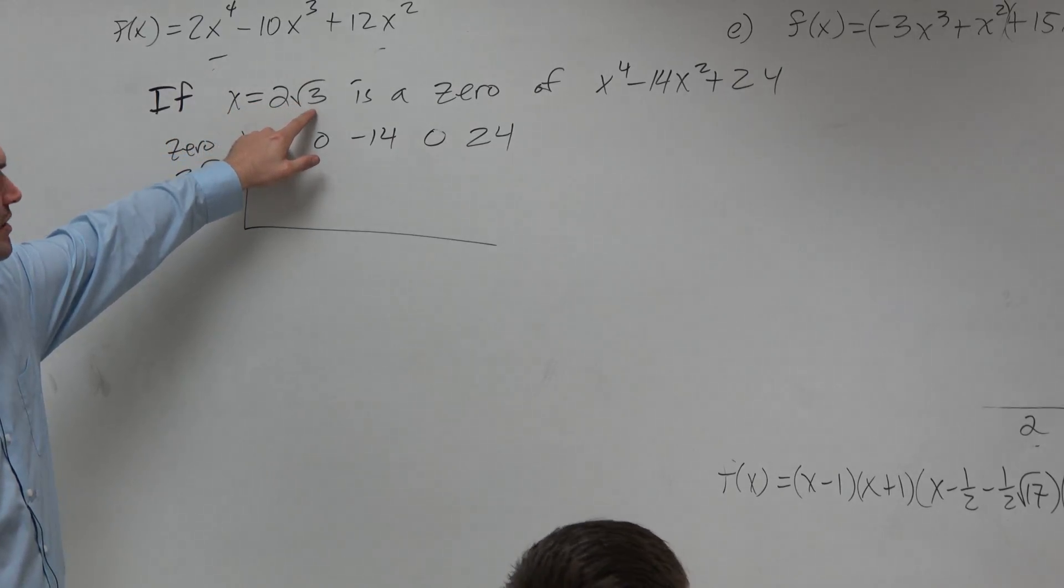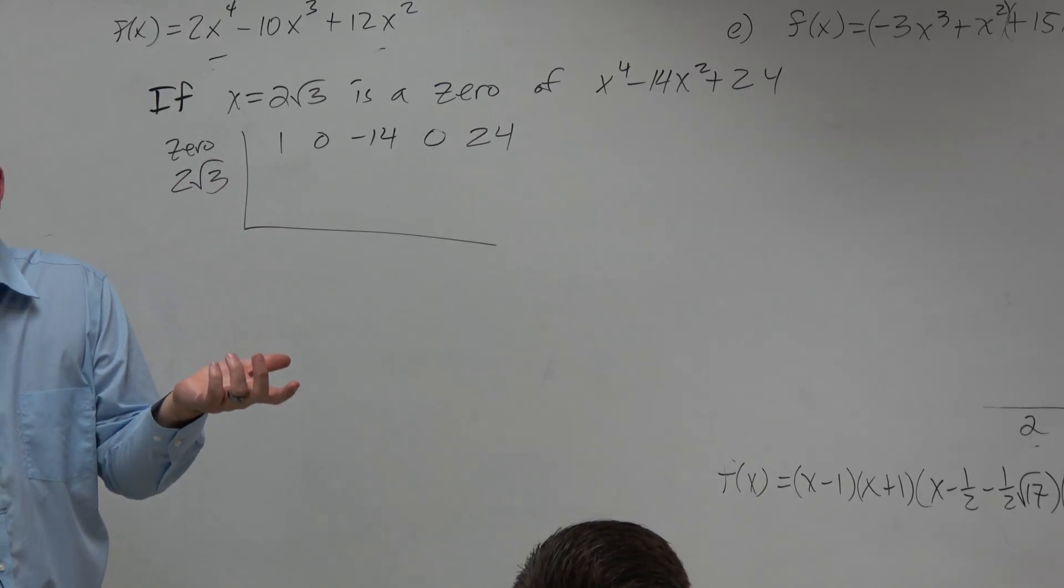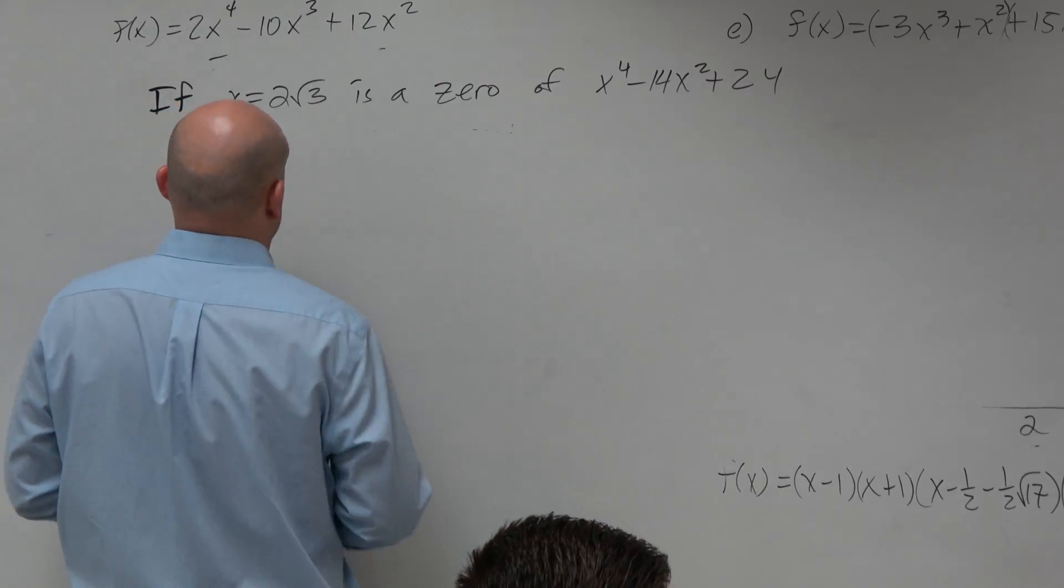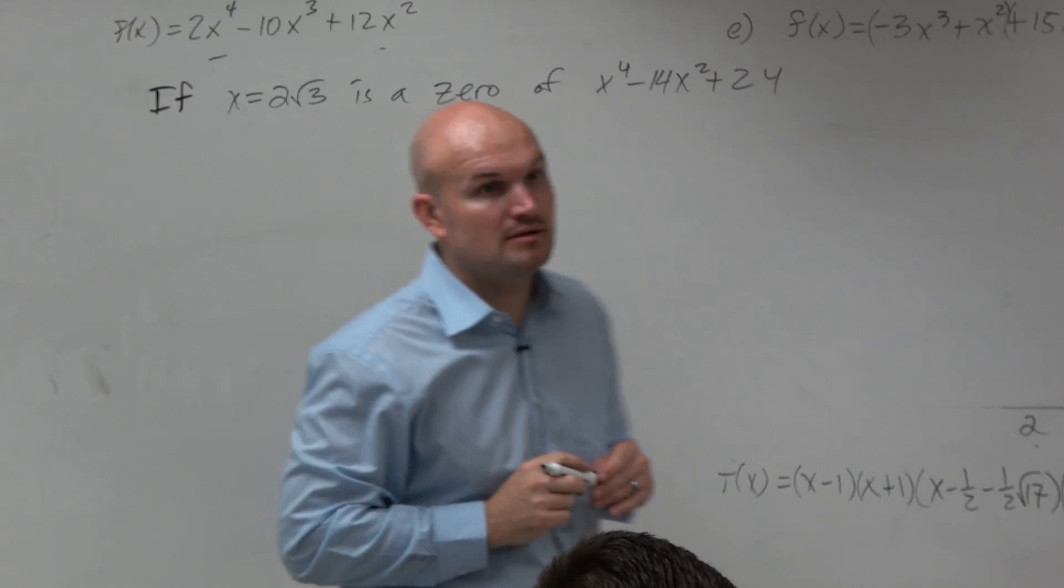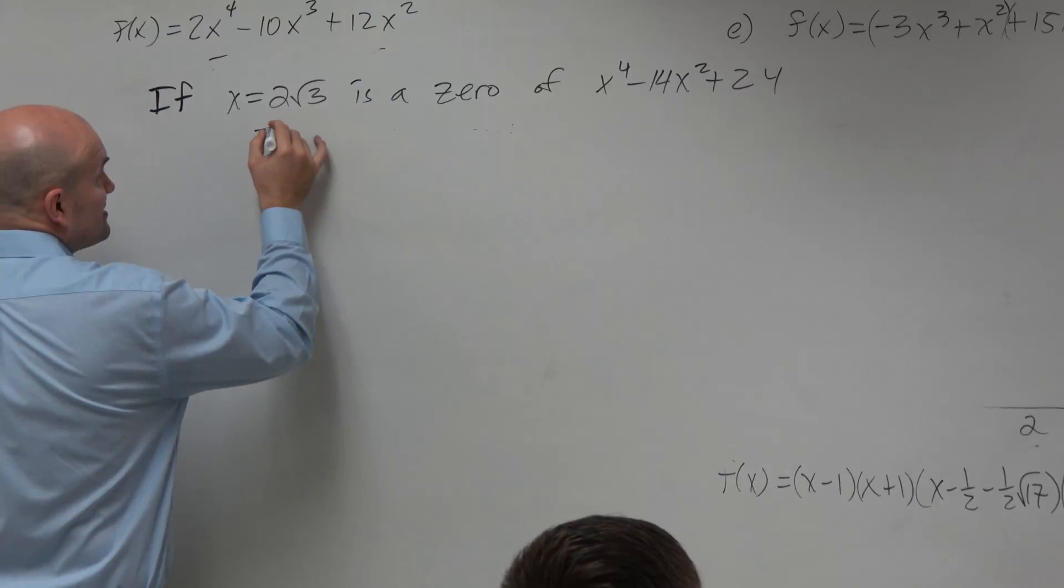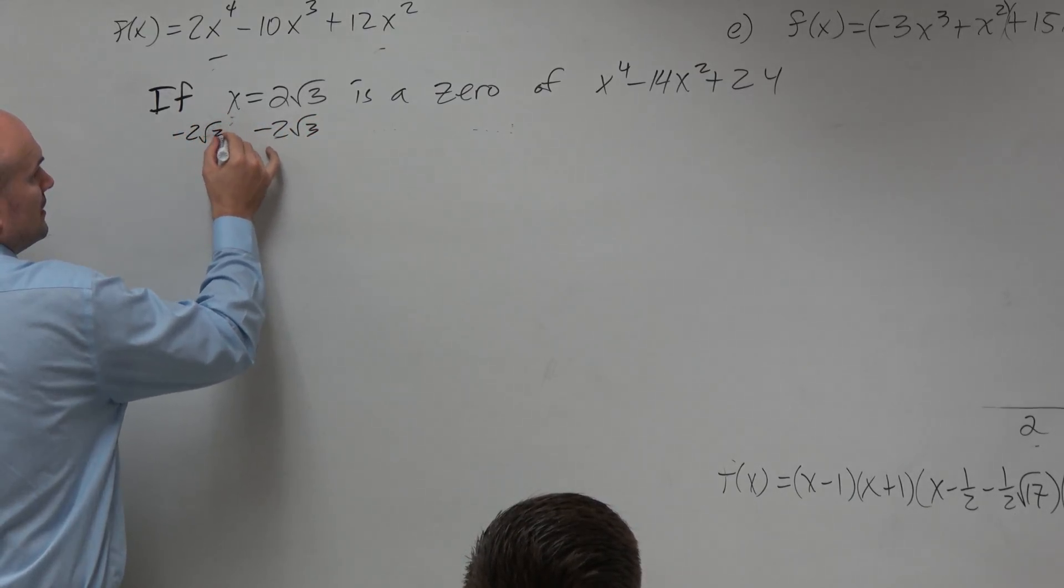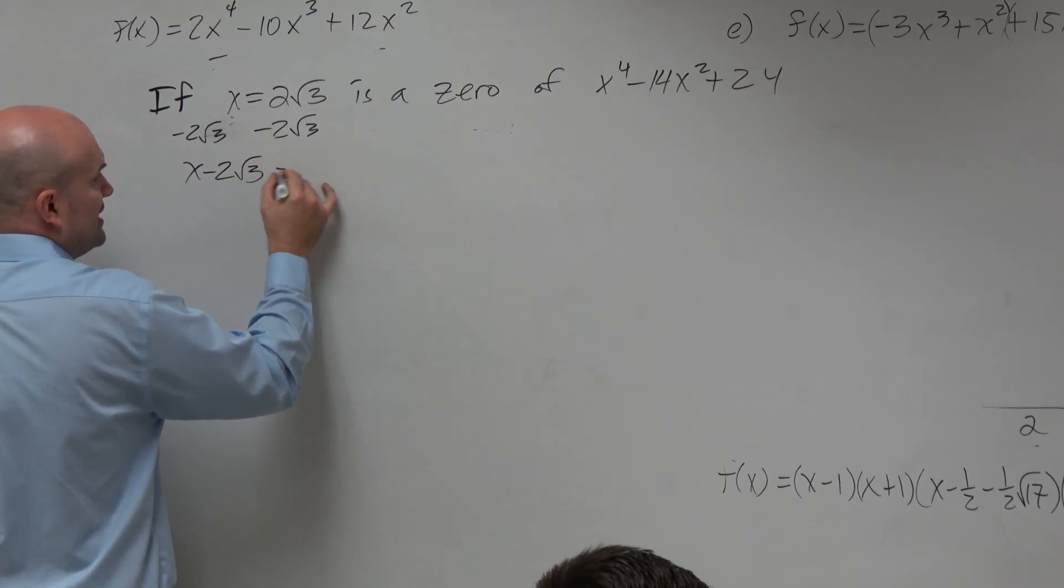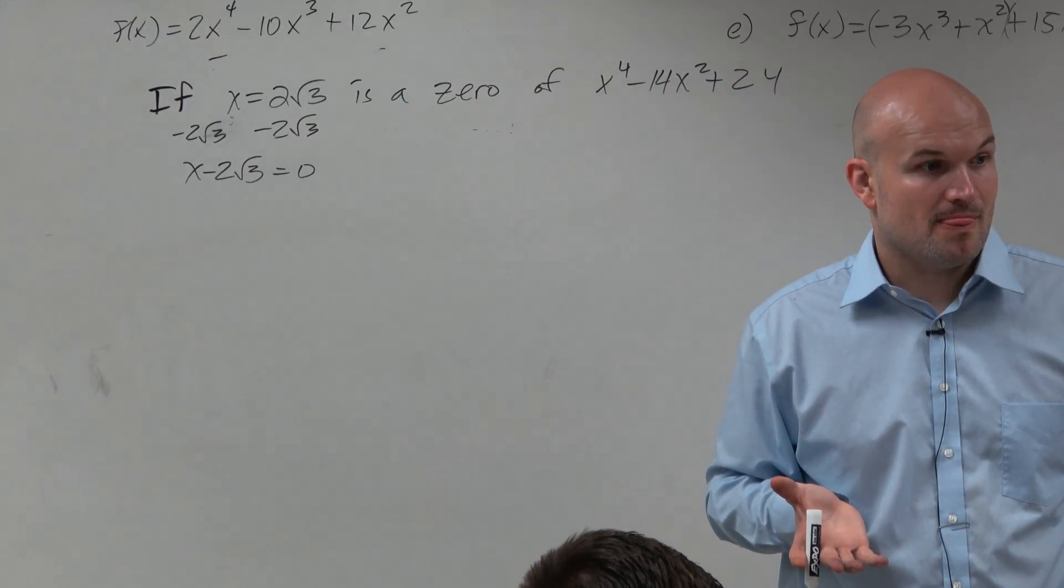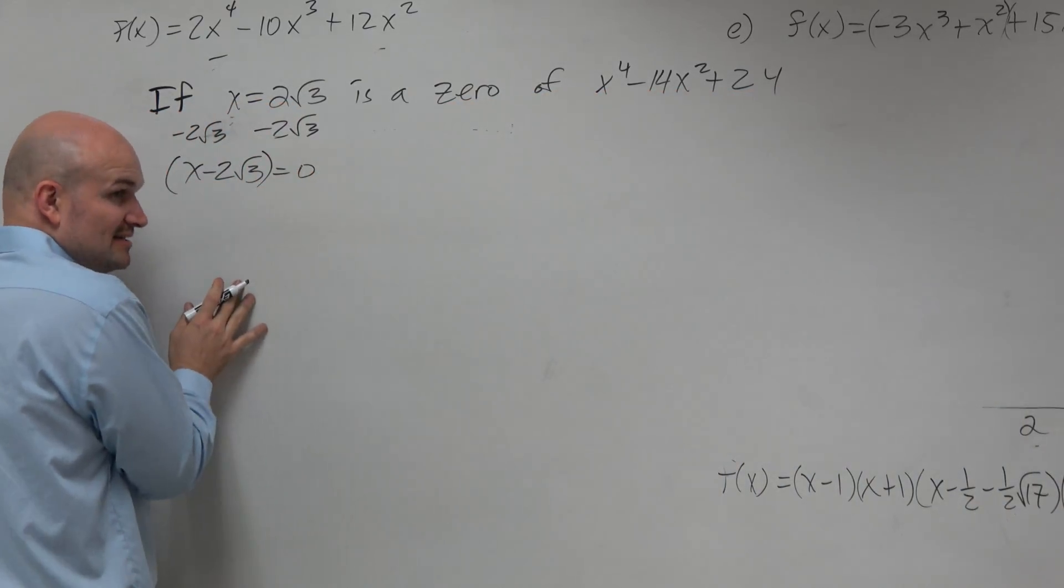If x = 2 + √3, what else has to be a zero? Minus. Now why is that the case? Well, let's forget about this method for a second. If this is the zero, what is my factor? We set it equal to zero, so we have x - 2√3 = 0, right? So what is my factor? x - 2√3. That is my factor.